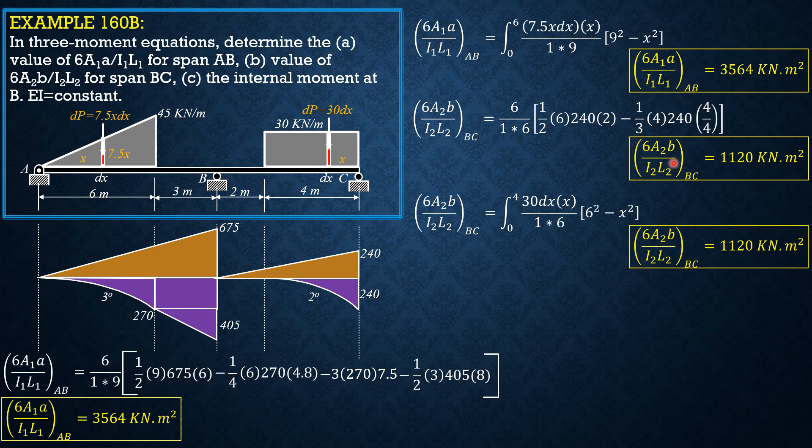Then, for internal moment at B, so take note, moment at A equals moment at C equals 0, then HA equals H sub C equals 0 also, as explained.